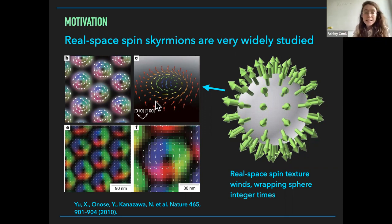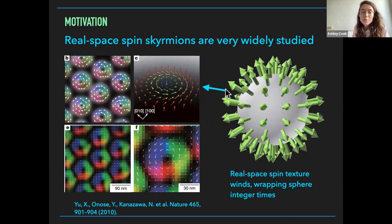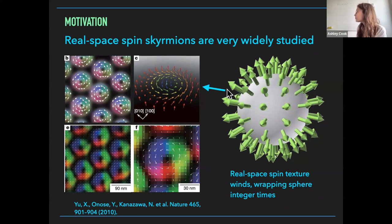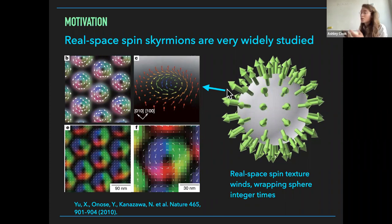This corresponds to a wrapping of the sphere exactly once. These skyrmions are spin or local moment textures that wrap the sphere some integer number of times, at least for what are called baby skyrmions. You can think of it as topological in the sense that you'd have to poke a hole in the spin texture in order to change the number of times the texture wraps the sphere.